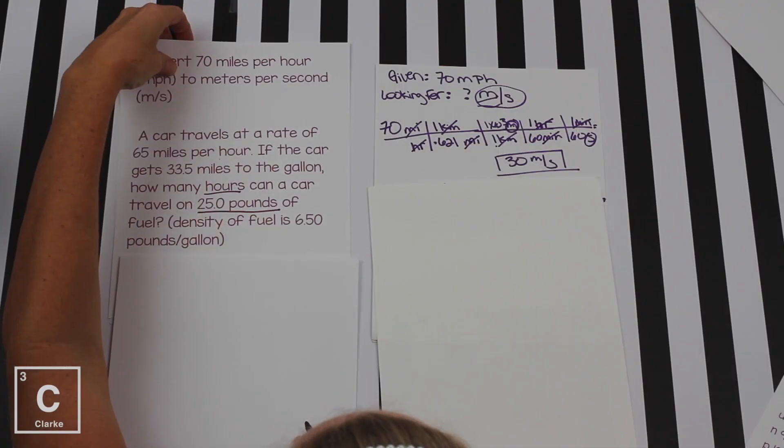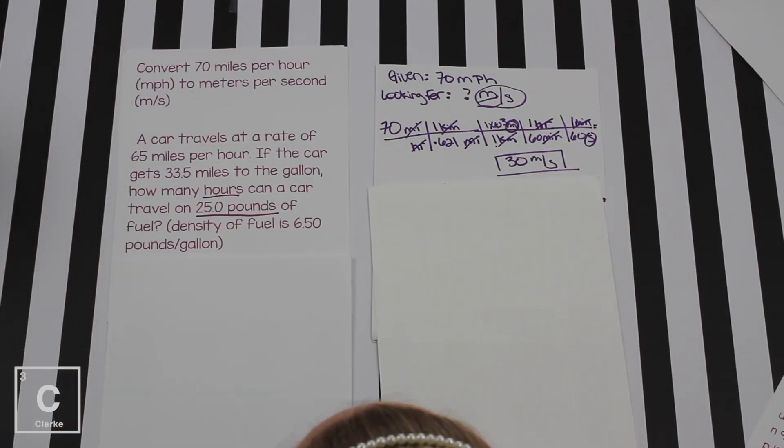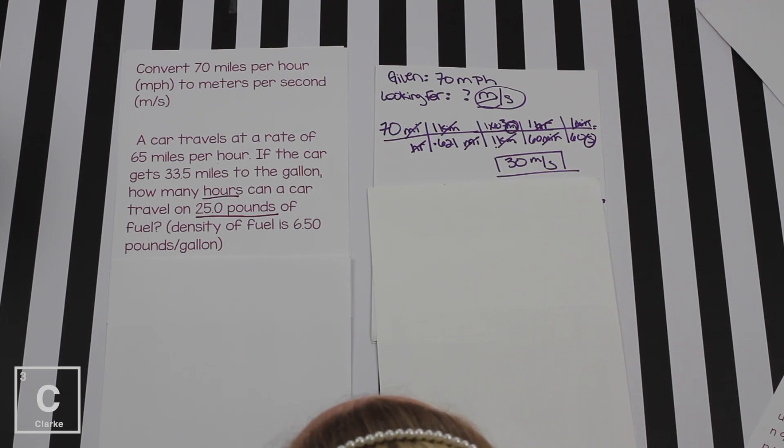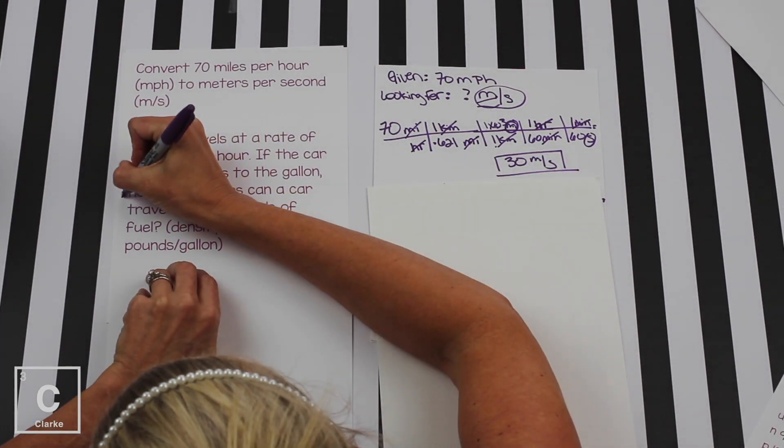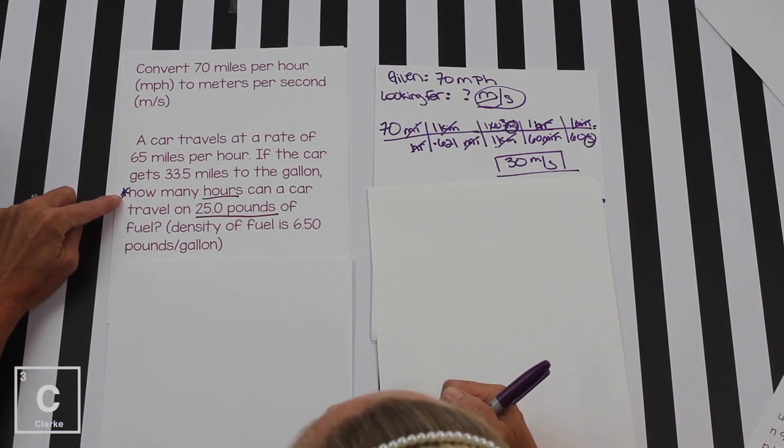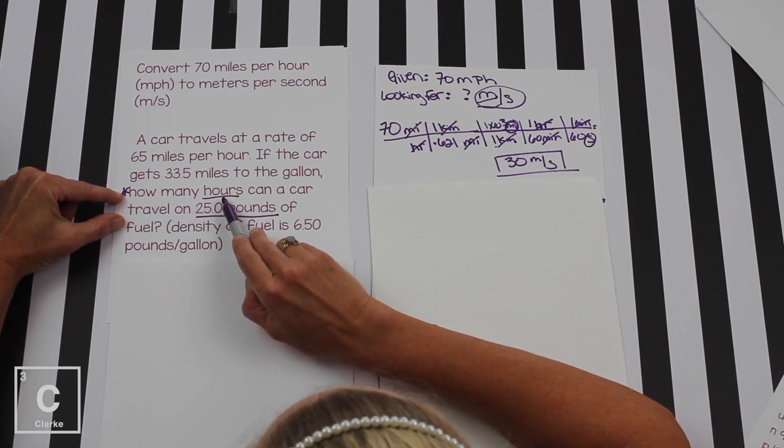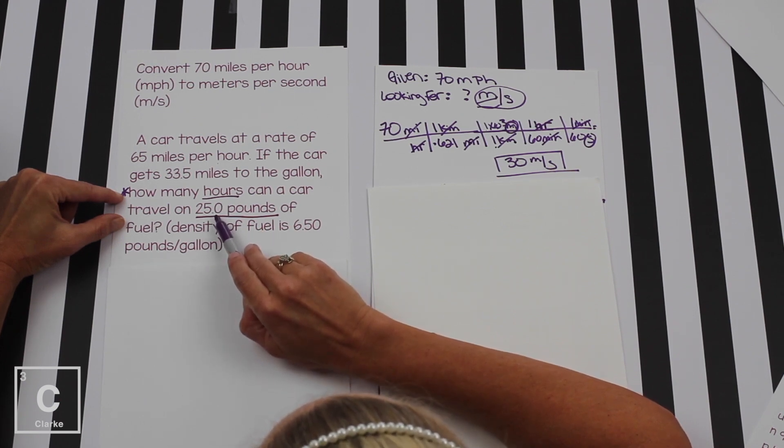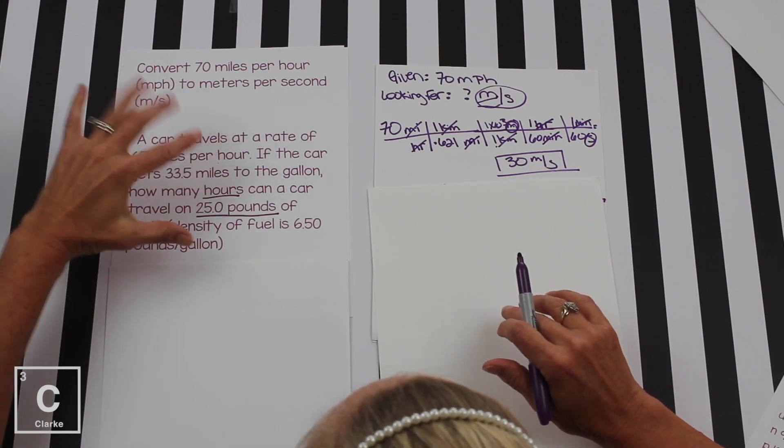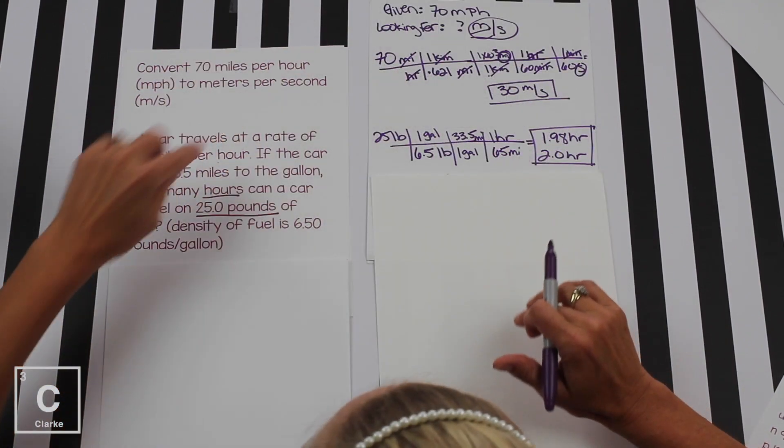Let's look at another problem that's even more complicated than the last problem. I know that looks rough, right? A car travels at a rate of 65 miles per hour. If the car gets 33.5 miles to the gallon, how many hours can a car travel on 25 pounds of fuel? Density of fuel is 6.5 pounds per gallon. Oh my gosh, that is a lot of numbers. How do we figure out the given? That's easy. Always go and look for the questioning words. How many? There's where our question actually starts. That's going to have what we're looking for and our given. How many hours, that's what we're looking for. And then this other number is our given, 25 pounds. That's where we're going to start.